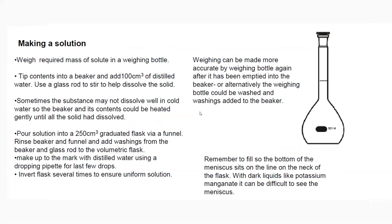Making a standard solution: for example, to make a standard solution of sodium chloride from 2 grams of solid NaCl. First, weigh the required mass of solute. Then tip the solid into a beaker and add approximately 100 cm³ of distilled water.